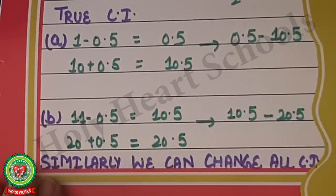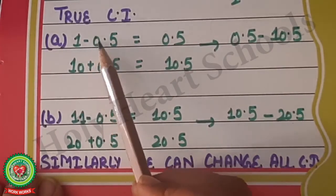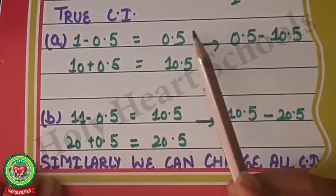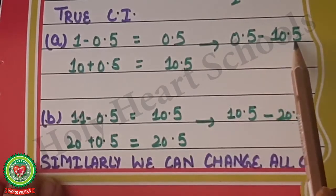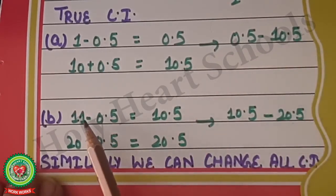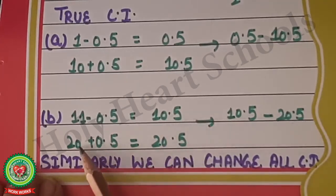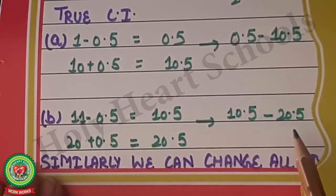For class interval 1–10, we subtract 0.5 from 1 and add 0.5 to 10, giving a true class interval of 0.5–10.5. For class interval 11–20, subtracting 0.5 from 11 gives 10.5 and adding 0.5 to 20 gives 20.5, so the true class interval is 10.5–20.5. Similarly, we can change all class intervals by following this process.